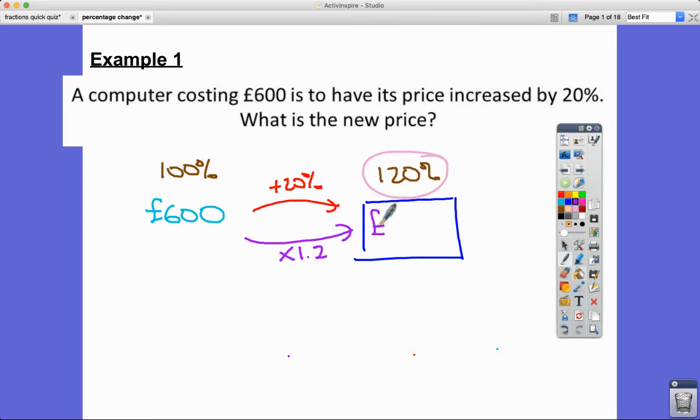So our answer here is just 720. So when I do £600 times by 1.2, I get £720. Nice easy first example.